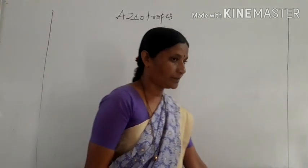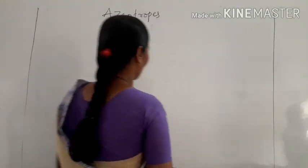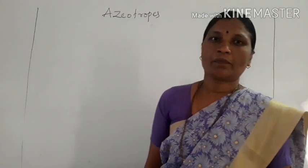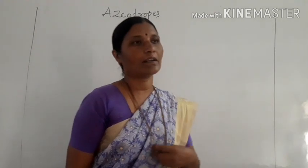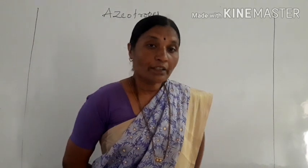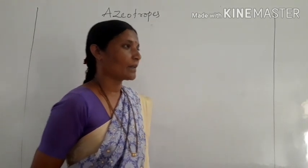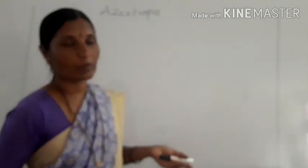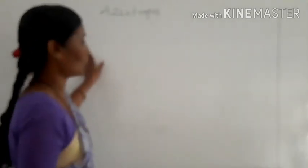Good morning to one and all. In the last class we discussed ideal and non-ideal solutions. In non-ideal solutions, there are two types: positive non-ideal and negative non-ideal solutions. Positive non-ideal solutions show higher vapour pressure than the individual solute and solvent vapour pressures. This is because the interaction between solute and solvent is weaker, hence vapour pressure is higher, showing a positive deviation from Raoult's law.